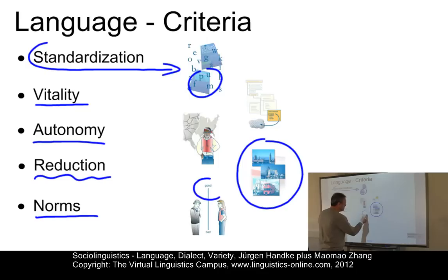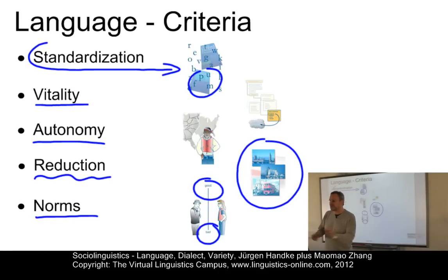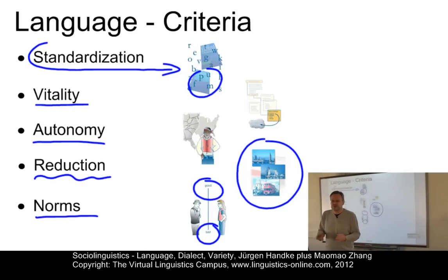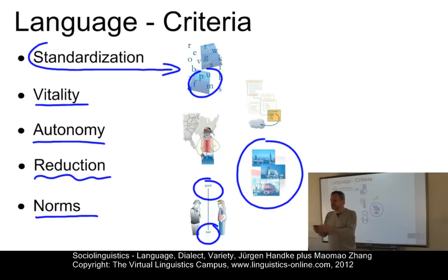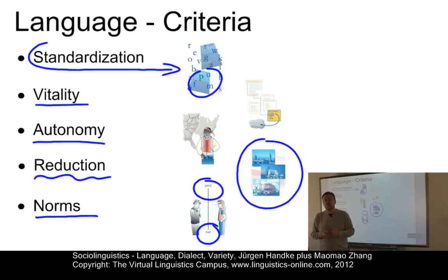Then we have norms — norms between good and bad. Languages normally involve norms; varieties don't. Speakers of languages have the feeling that they are good or bad speakers, and that good speakers represent norms of proper usage. For example, there are prescriptive rules in present-day English like 'do not split infinitives' — do not say 'to boldly go,' as we know from a famous movie.